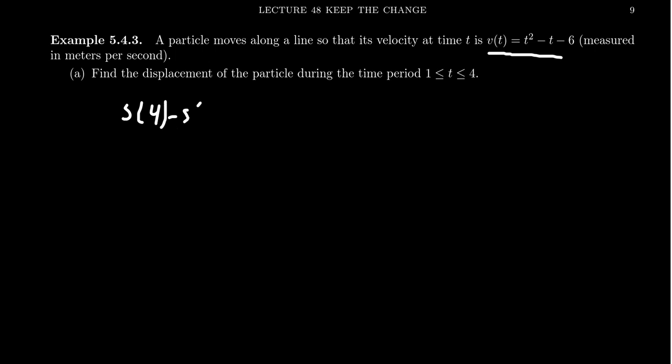By the Fundamental Theorem of Calculus, since velocity is the derivative of position, if we want to find the change in position — the displacement — during the time period one to four, then s(4) minus s(1) equals the integral from one to four of the velocity function. We don't have enough information to know the position function itself, since we'd need an initial value, but with just the velocity we can calculate the net change in position.